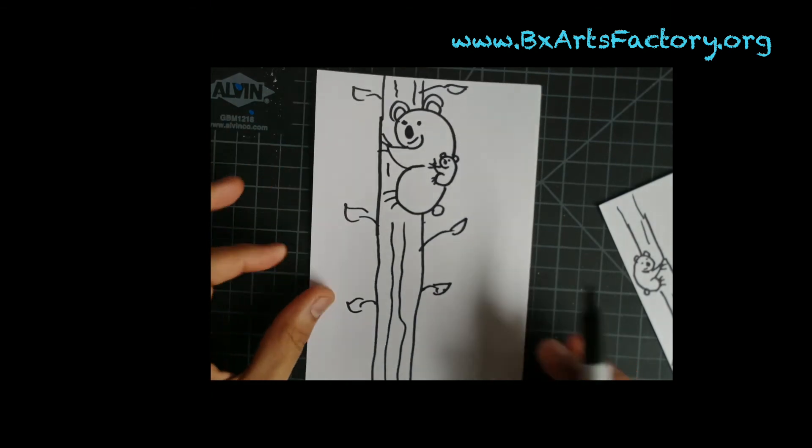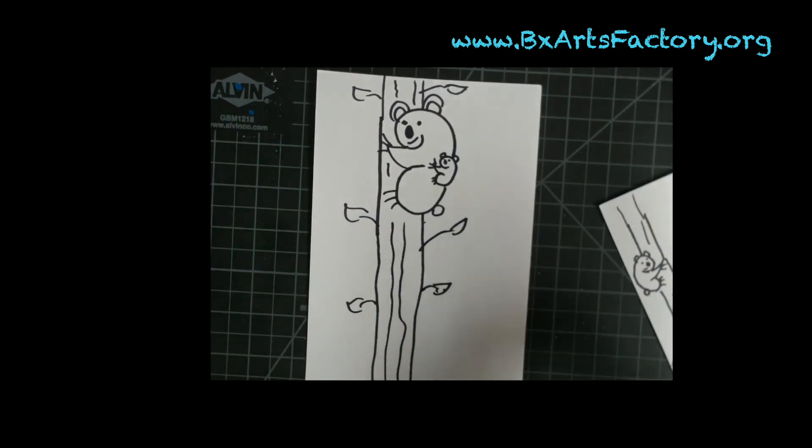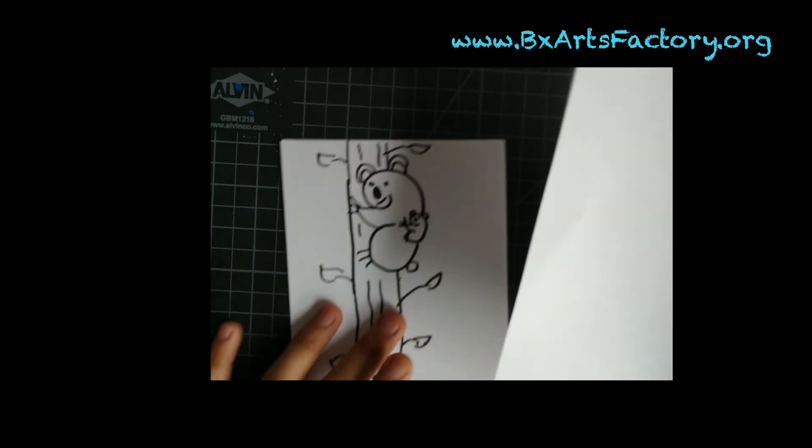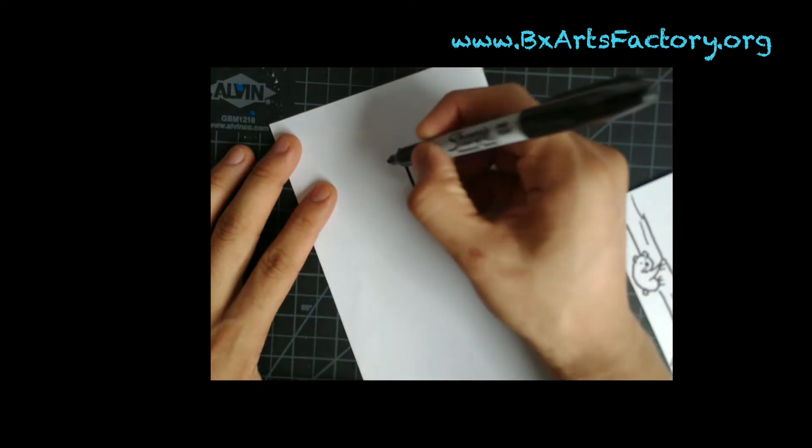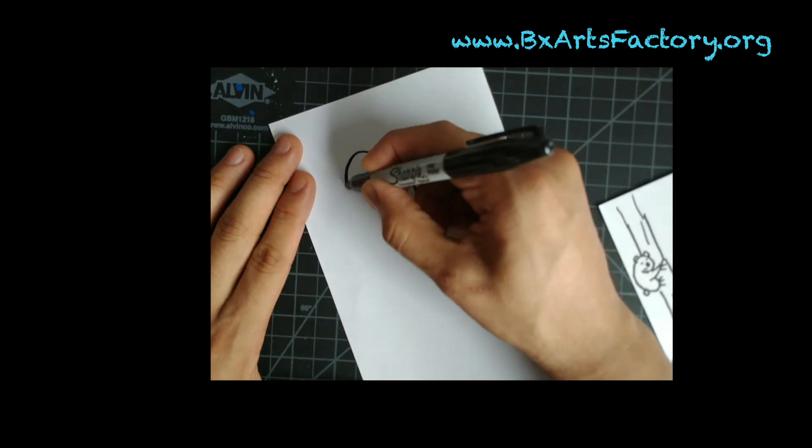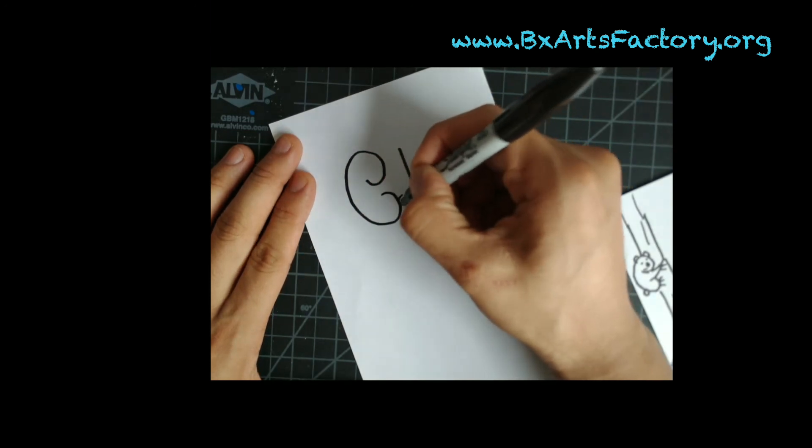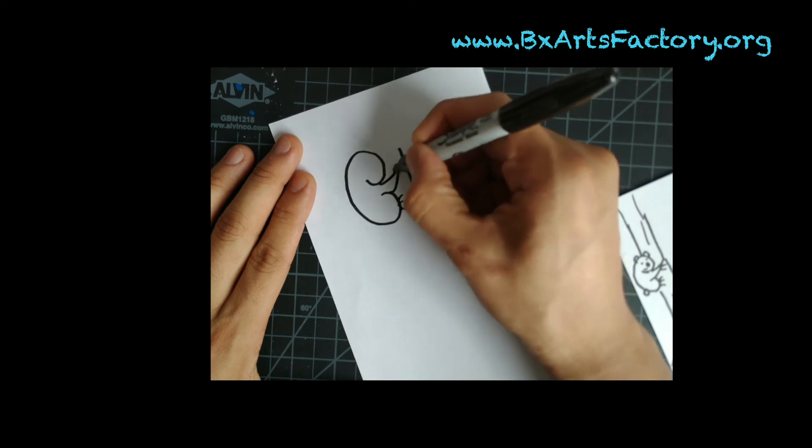If you decide to do the koala bears facing the other way, all you have to do is reverse the technique. So you just do straight line down. You curve. You curve in. One, two, three. Triangle. One, two, three.